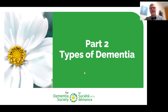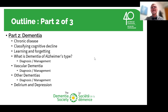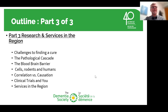Thank you, Herman and Chelsea. Good evening, everyone. As you heard, today is part two. I'm going to assume most of you took part in part one last week on the aging brain — we'll recapture some of that to refresh the important parts. Today we'll be covering dementia, the chronic disease of dementia, classifying it, learning and forgetting, different types including Alzheimer's, vascular, and others, and ending with delirium and depression. Next week you'll hear more about research and services available in the region.